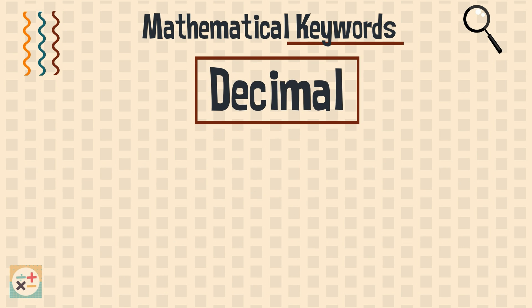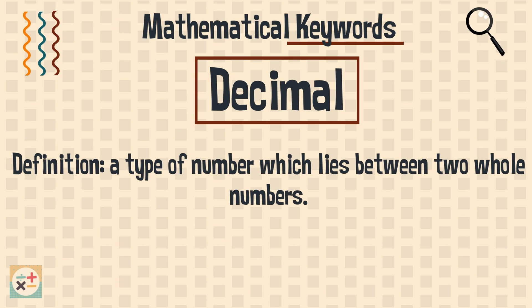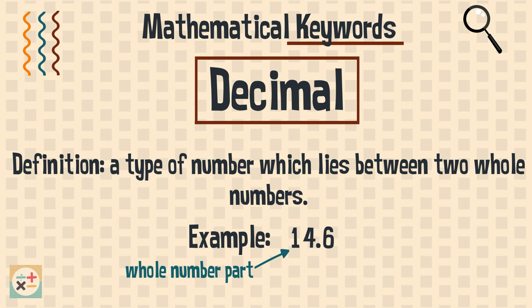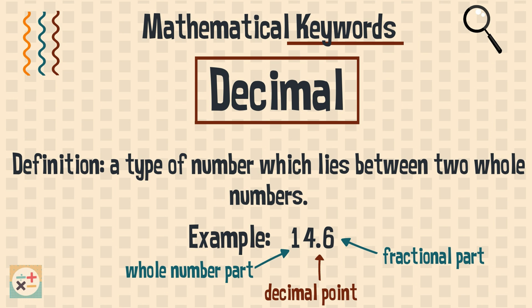Decimal. A type of number which lies between two whole numbers. Decimals contain a whole number part and a fractional part. These parts are separated by a decimal point. For example, the decimal number 14.6 lies between the whole numbers 14 and 15.